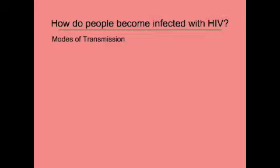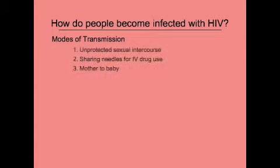People become infected with HIV in three main ways: unprotected sex, which can be oral, anal, or vaginal intercourse; sharing needles for IV drug use; and mother to fetus transmission prior to birth or while breastfeeding.